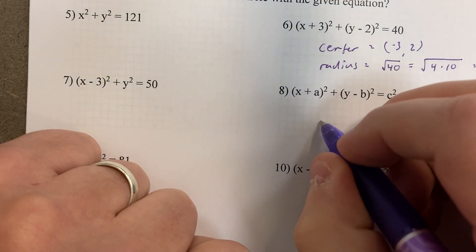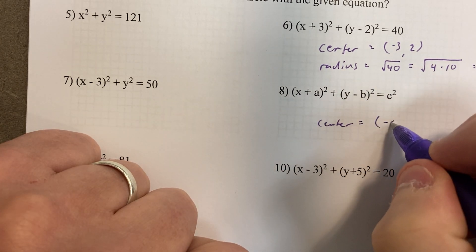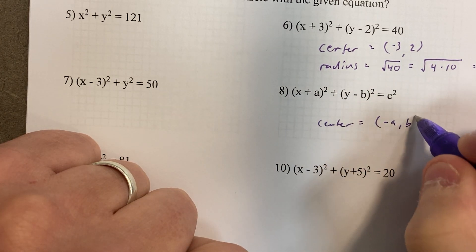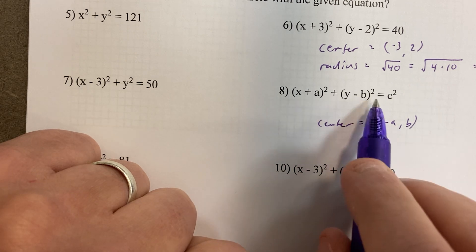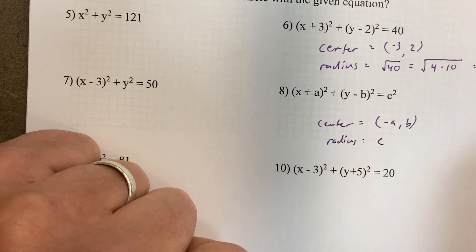On 8, here's an interesting one. The center is (-a, b), and the radius is c. Interesting.